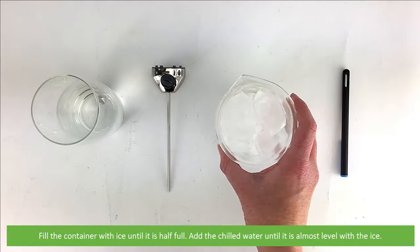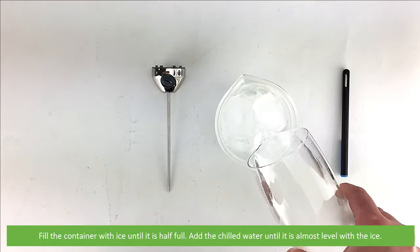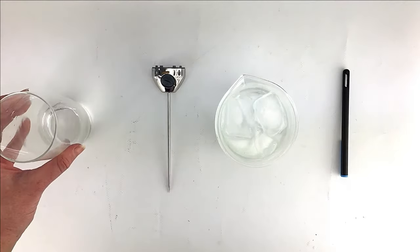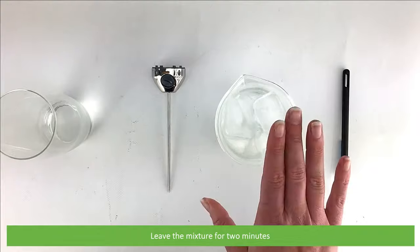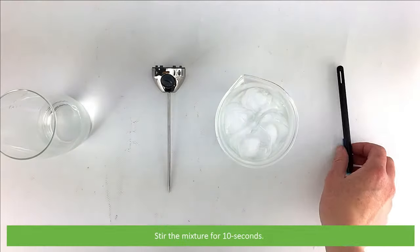Fill the container with ice until it is half full. Add the chilled water until it is almost level with the ice. Leave the mixture for two minutes. Stir the mixture for ten seconds.